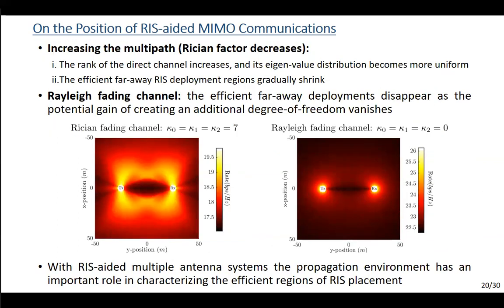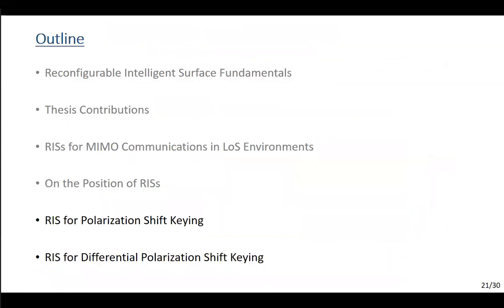As the rank of the channel matrix increases — as the channel becomes richer with multi-path components or the Rician factor decreases — the far-efficient region of deployment gradually shrinks until it disappears in the case of a Rayleigh fading channel, because the channel is already full rank and we no longer need extra degrees of freedom. So we conclude that in RIS-aided MIMO, depending on the propagation environment: if it's line-of-sight, we can place the RIS far or near; if it's rich scattering, we should place it close to the transmitter or receiver.